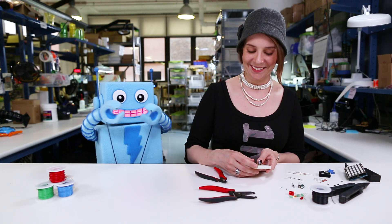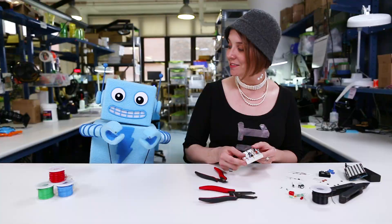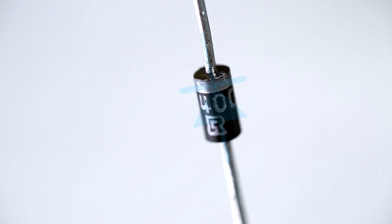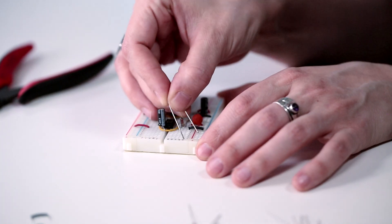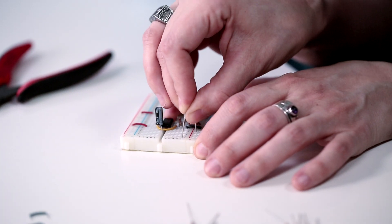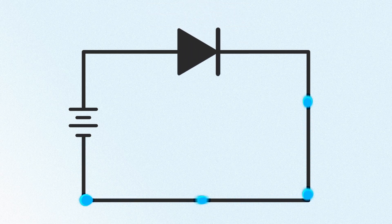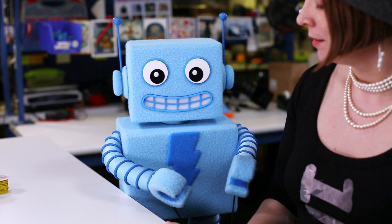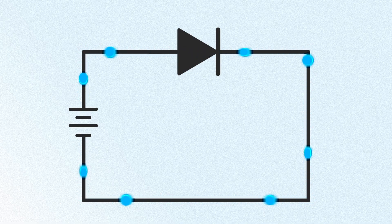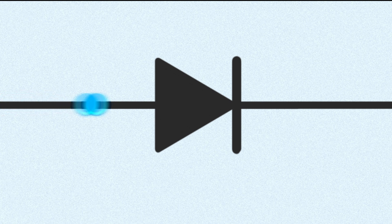Oh no, how do you make sure that doesn't happen? Well, we use a diode. By placing a diode at the circuit's power input, we ensure that the current can only flow in one direction — the correct direction that we've designed the circuit to work with. So, a diode is like a one-way street for electrons? Exactly. The electrons can only flow through the diode in one direction, and they have a really hard time going back the other way.